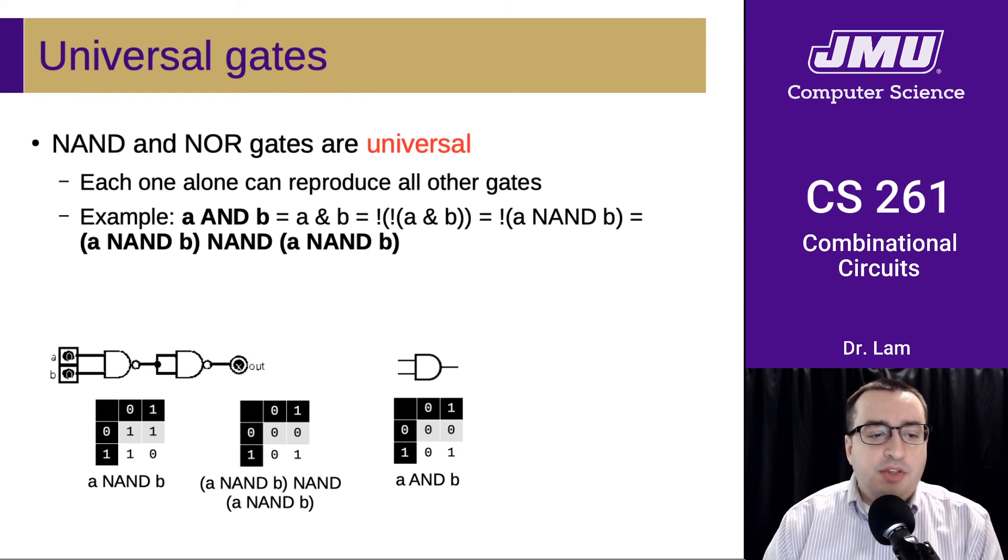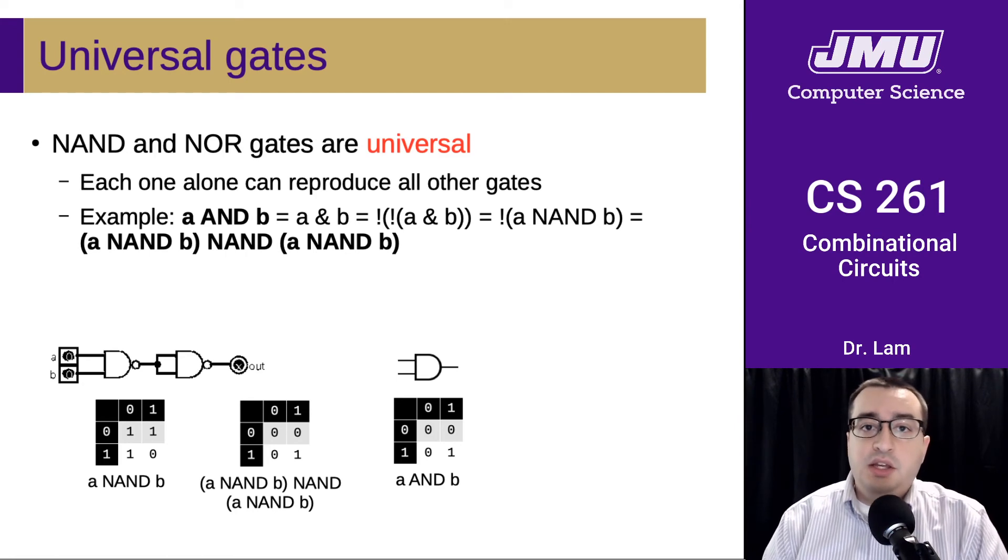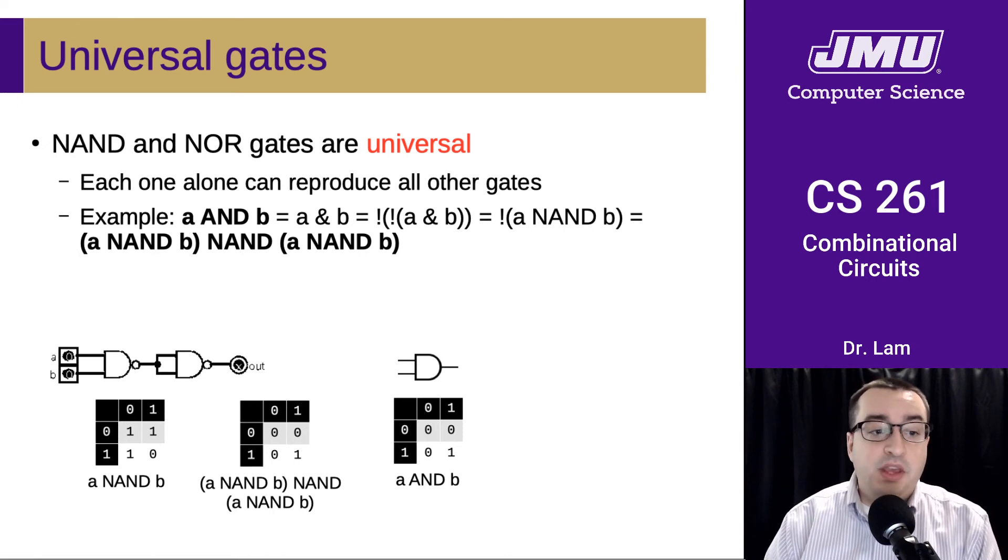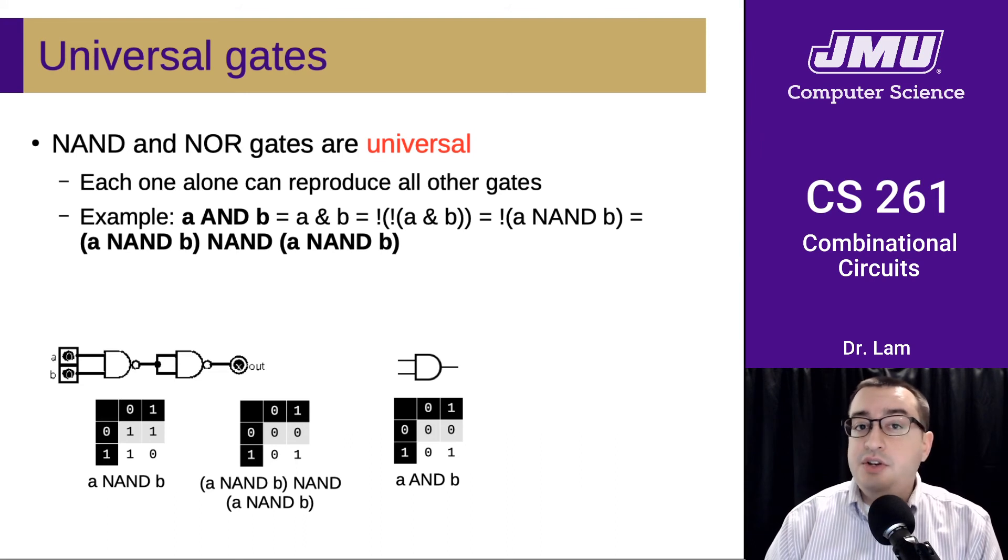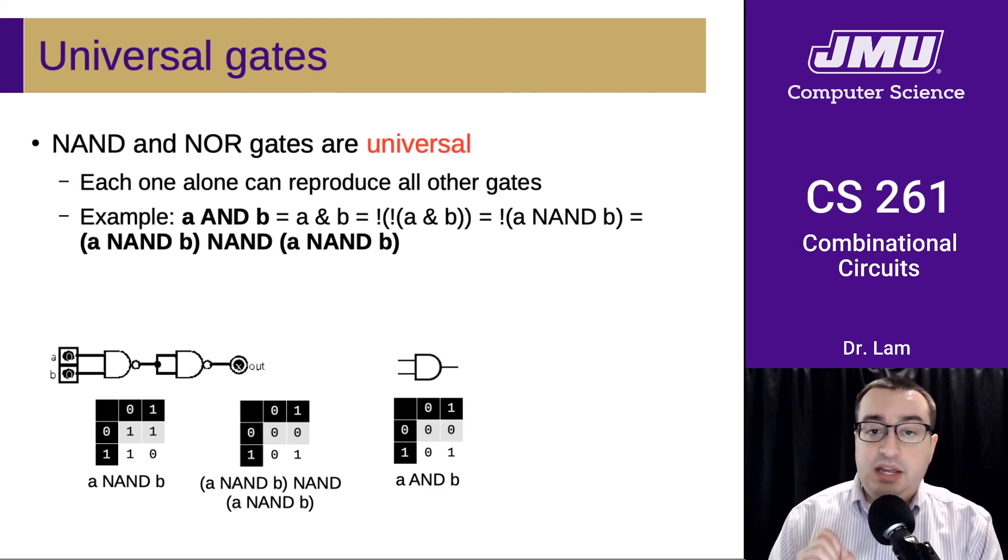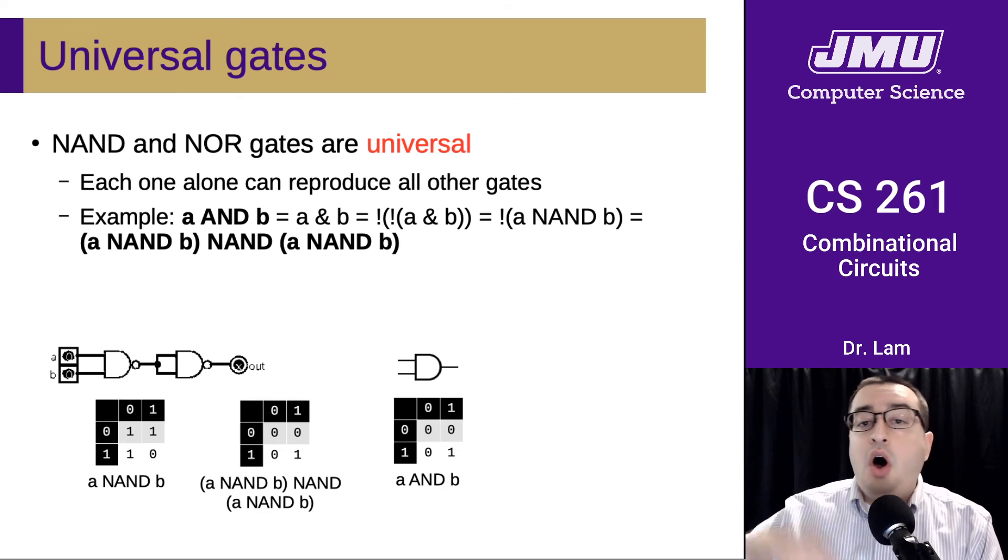So the last thing I'll say in this video is that there is this notion of a universal gate. We've already seen that we can build an XOR using other gates. We didn't have to have an XOR if we had those other gates. And so it turns out that NAND and NOR are kind of special in that they are universal. It means that we only need NAND gates to reproduce all the other gates, including NOR.